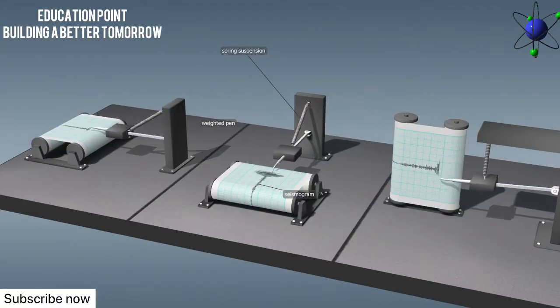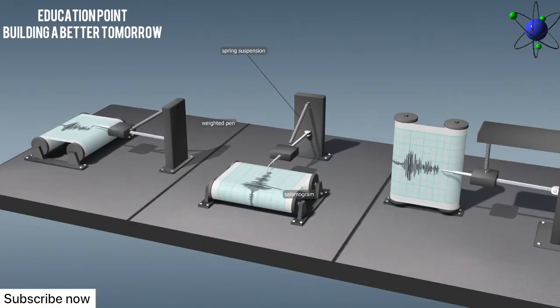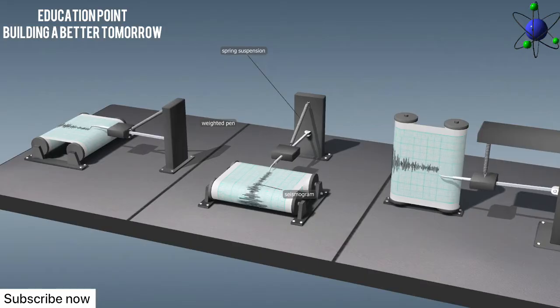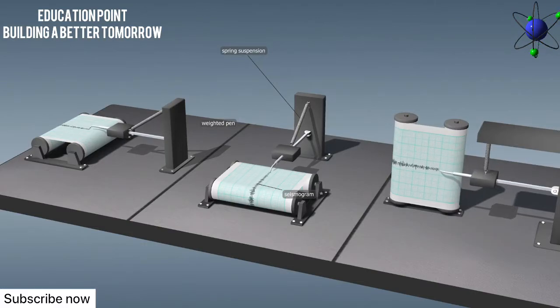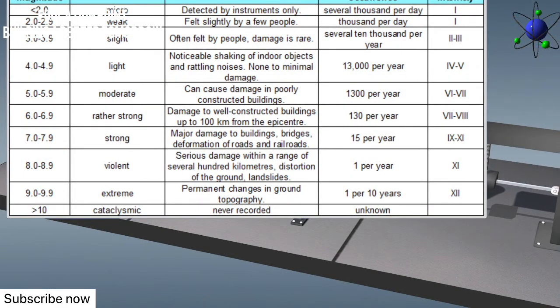A seismograph consists of a base fixed to the ground, a paper roll rotating on a cylinder attached to the base, and a weighted pen attached to a frame with a spring.